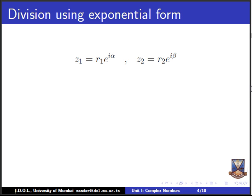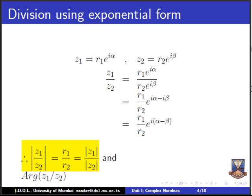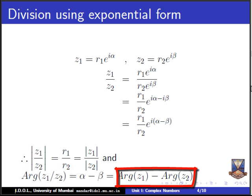Let us go to division using exponential form. We have Z1 and Z2 as before, and we compute Z1/Z2. Taking out R1/R2, the exponential e^(iα) divided by e^(iβ) gives e^(i(α−β)). So the modulus of the quotient is |Z1|/|Z2|, and the argument of Z1/Z2 equals arg(Z1) − arg(Z2) — the argument of the quotient is the difference of the arguments. This is also a very useful property that can come as a problem.